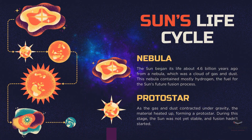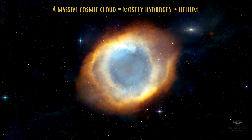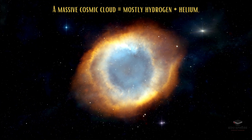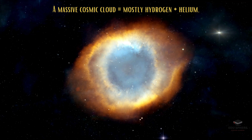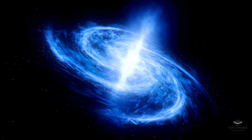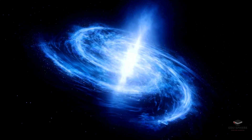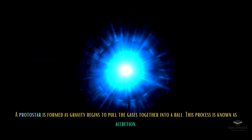Turning to the Sun's life cycle, we begin with its origin in a nebula. The Sun's life began about 4.6 billion years ago in a nebula — a giant cloud of gas and dust mainly composed of hydrogen, which would become the Sun's fuel. Gravity caused the gas and dust to contract, and as the cloud contracted, it heated up, leading to the formation of a protostar.